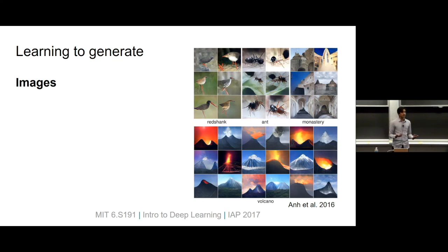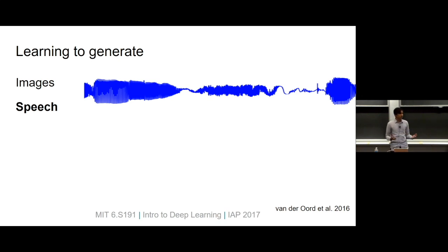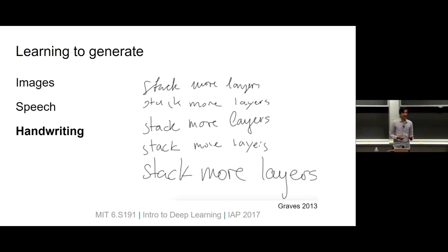We can also use generative models to generate speech — the classic problem of speech synthesis, getting computers to talk. Recently, deep neural networks have gotten to the point where we can feed them a really large dataset of raw audio waveforms without any pre-processing, and a sufficiently big generative model will learn the statistical properties of those waveforms and generate audio that sounds convincingly human. We can also generate handwriting by feeding in a sequence of pen strokes and asking the network to produce more similar-looking strokes.